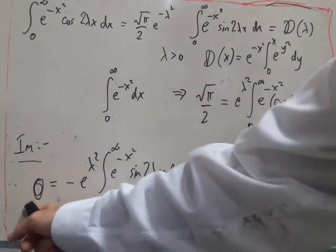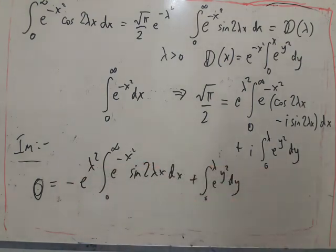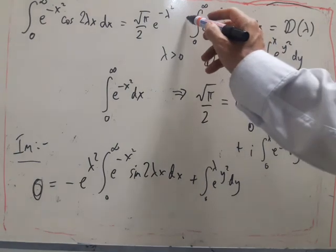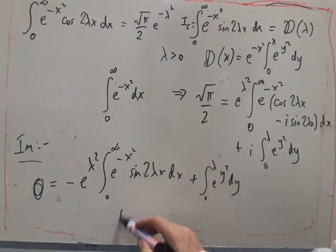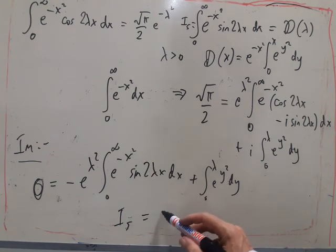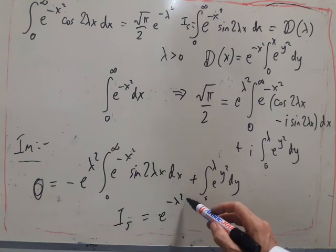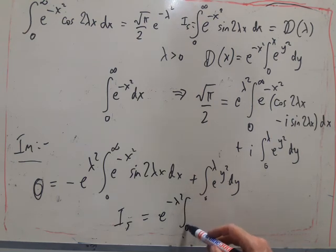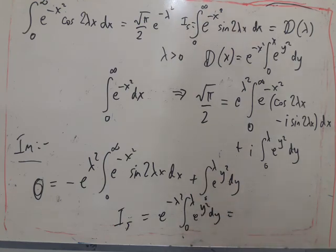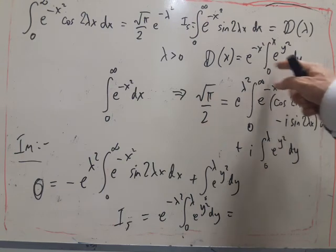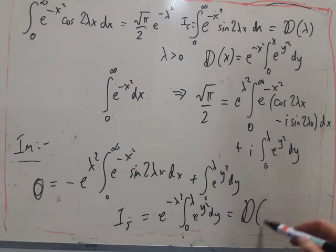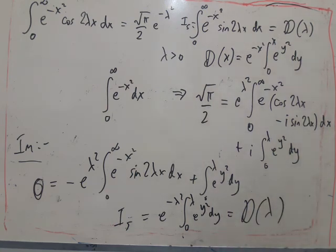Then I can move this onto this side, and divide through by e to the lambda squared, and I end up with, let's just call this i s, and we get i s is equal to e to the minus lambda squared, times 0 to the lambda, e to the y squared dy, and looking, comparing the definition, instead of x I've got lambda, so this is simply the Dawson integral of lambda, which is what I wanted to prove.